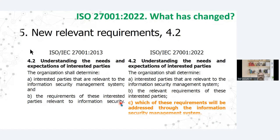The fifth change is in clause number 4. In clause number 4.2, which is understanding the needs and expectations of the interested parties, the rest remains the same — clause 4.2 a and b have no changes at all. Whereas a new 4.2 c is being added which says which of these requirements will be addressed through an information security management system. So it is an addition to clause 4.2 a and b.